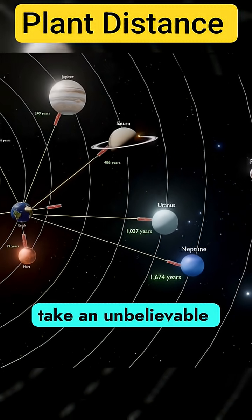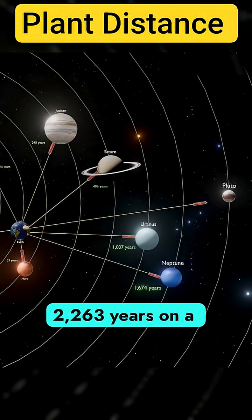To Pluto, it would take an unbelievable 2,263 years on a high-speed train.